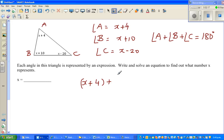Angle B measures x plus 10. So I'll write x plus 10. And angle C is x minus 20 is equal to 180.